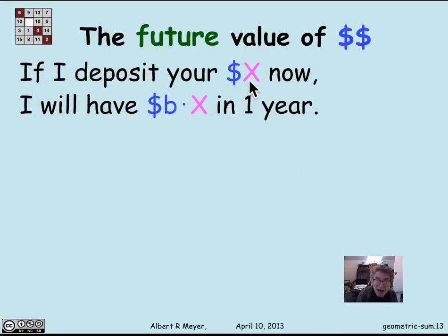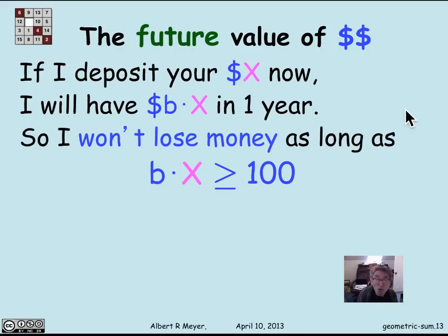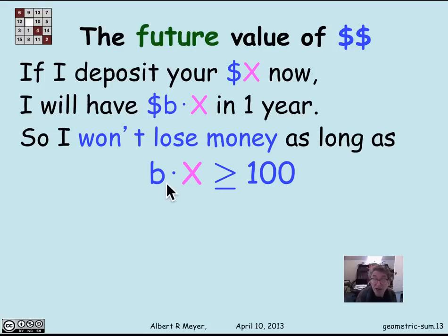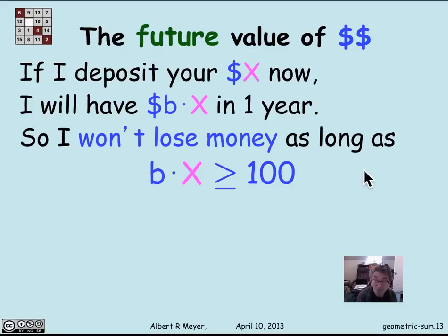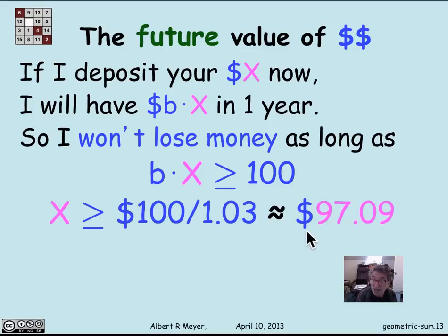If I deposit your x dollars now, I will have B times x dollars in one year. Assuming the bank is completely reliable, I won't lose any money providing that B times x is greater than or equal to 100. I need the x dollars you give me now to be worth the $100 I'm supposed to pay you. I'll come out ahead if B times x is greater than or equal to 100, and it's completely fair if B times x equals 100.